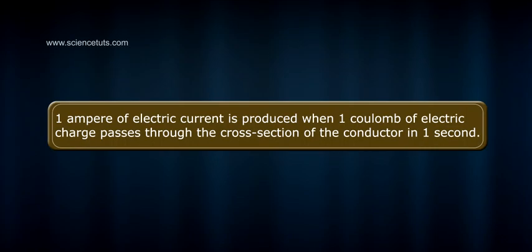One ampere of electric current is produced when one coulomb of electric charge passes through the cross section of the conductor in one second.